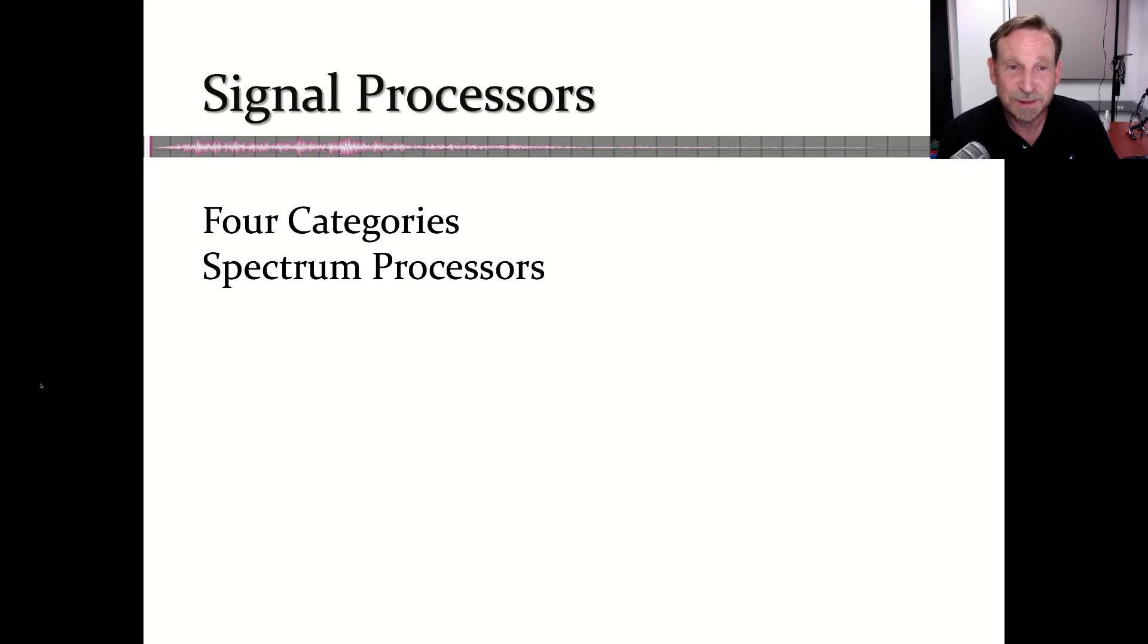So those were our introductory discussions of signal processors. We started with the four categories. Remember STAN: spectrum, time, amplitude, noise. We'll get into the other categories in other videos. And we did focus on spectrum processors, particularly the filters and equalizers. And that will pretty much sum it up for us this time.